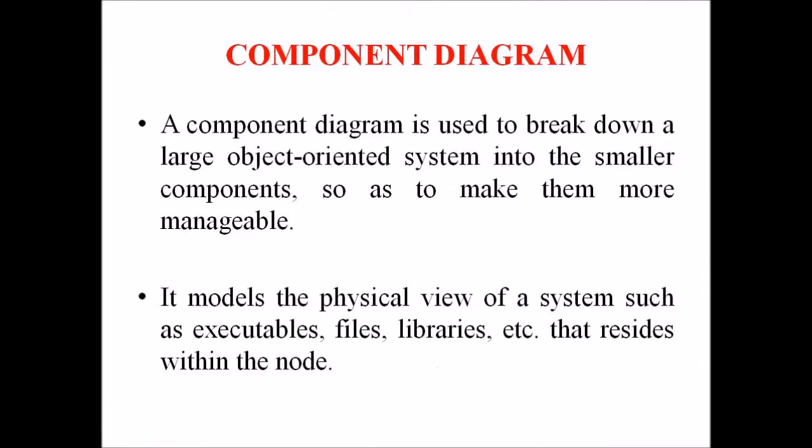This UML component diagram is a UML structural type of diagram. A component diagram is used to break down a large object-oriented system into smaller components so as to make them more manageable. It models the physical view of a system such as executables, files, libraries, etc., that reside within the node.